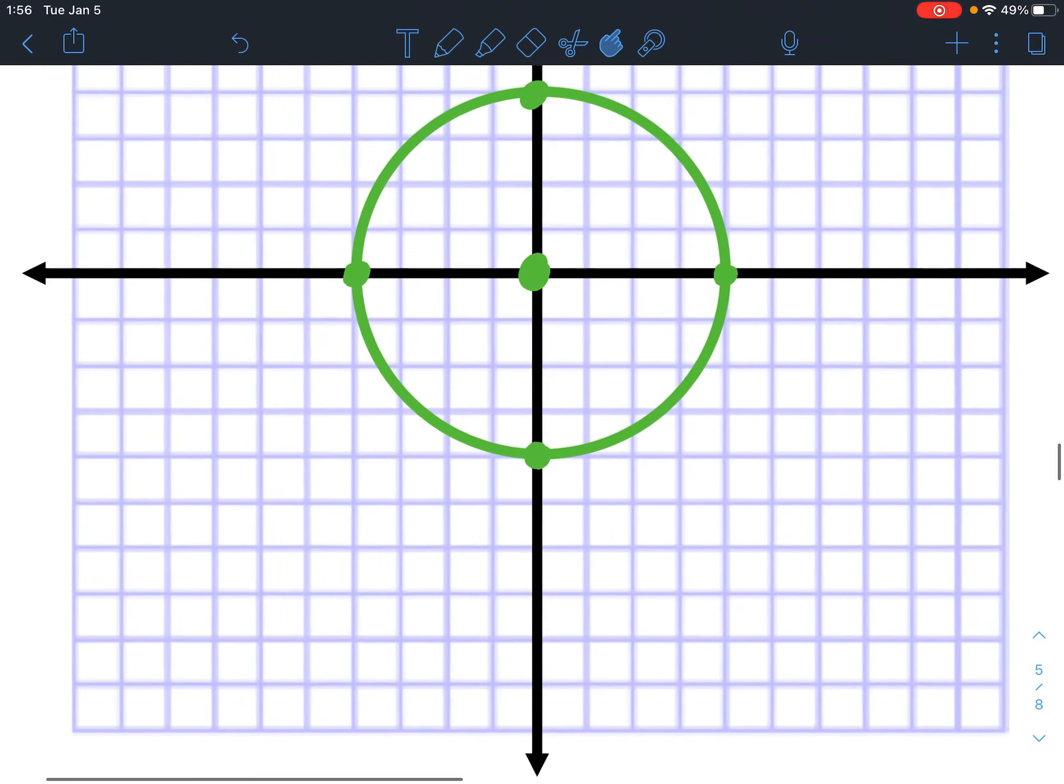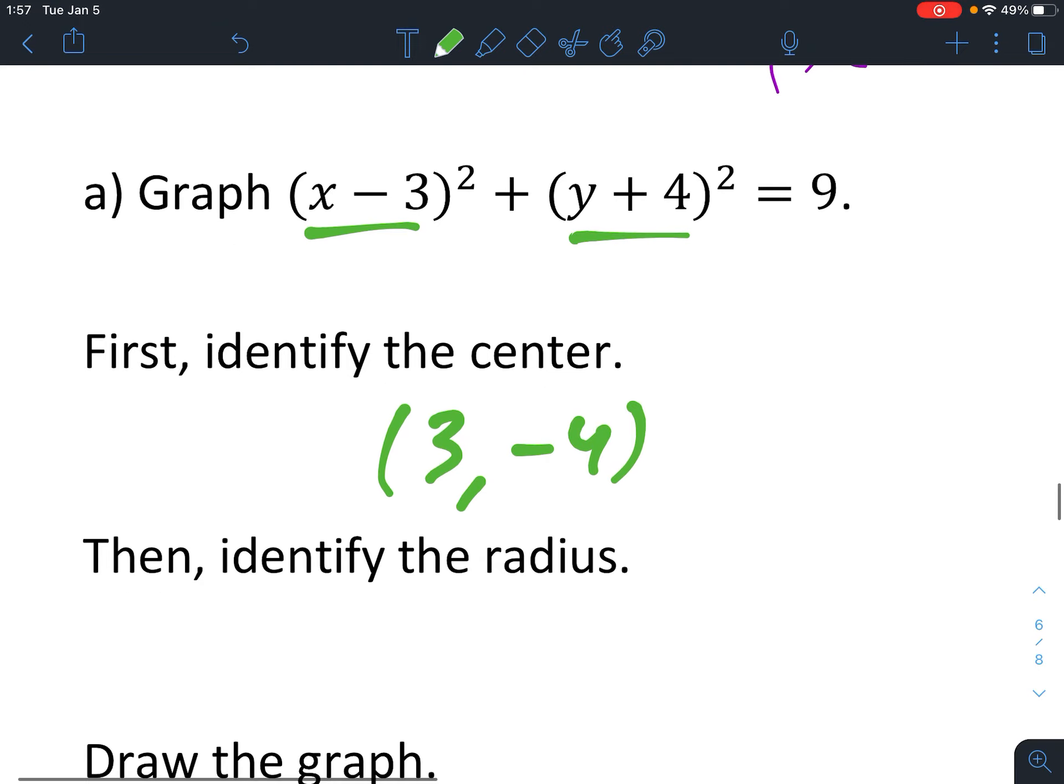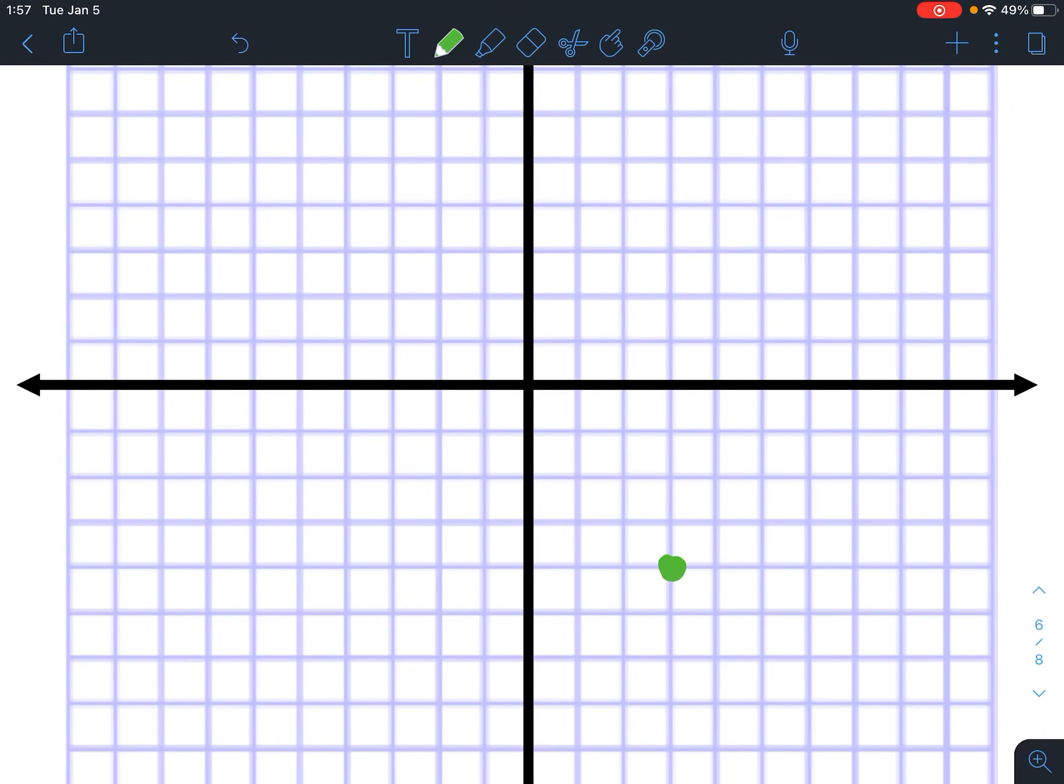Let's take a look at example 4. We're going to graph circles again, but this time we're not going to be centered at the origin. So remember the center is always the opposite of these numbers here. So my center is at positive 3, negative 4. I know r squared equals 9, therefore my radius is 3. So I'm going to plot the point 3, negative 4. And from there, I'm going to go up 3, right 3, down 3, and left 3. And there's my circle.